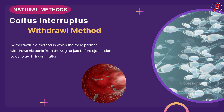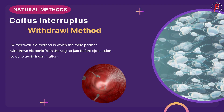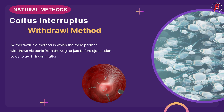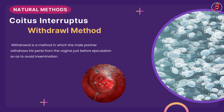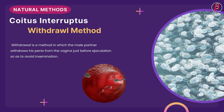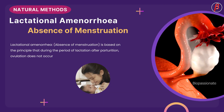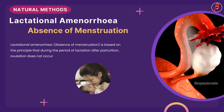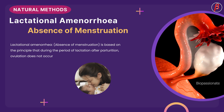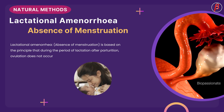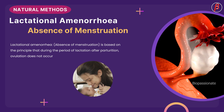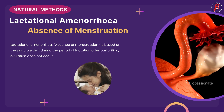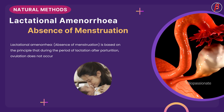In the withdrawal method, the male partner withdraws his penis from the vagina just before ejaculation so as to avoid insemination. Lactational amenorrhea — so-called absence of menstruation — works based on the principle that during the period of lactation after parturition, ovulation does not occur.